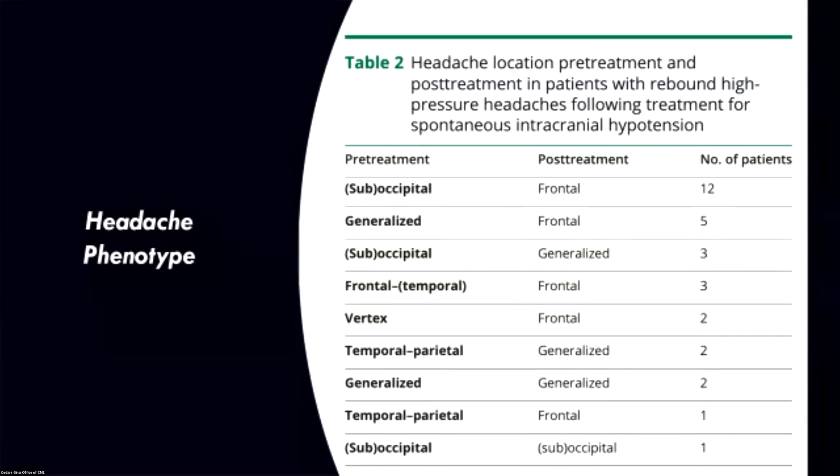They looked at the effect of venous stenosis. In this case, they found some differences. That's not really what I want to focus on for this talk. I want to look at the clinical characteristics of rebound. So they also found that the headache phenotype changed in most patients. They went from occipital or suboccipital to frontal, 12 patients. Generalized headaches to frontal in five patients. Suboccipital to generalized in three patients. And then a couple of other smaller variations. But you can see, again, most of the patients either had generalized or suboccipital headaches in the beginning, and most of them noticed a change in headache phenotype.